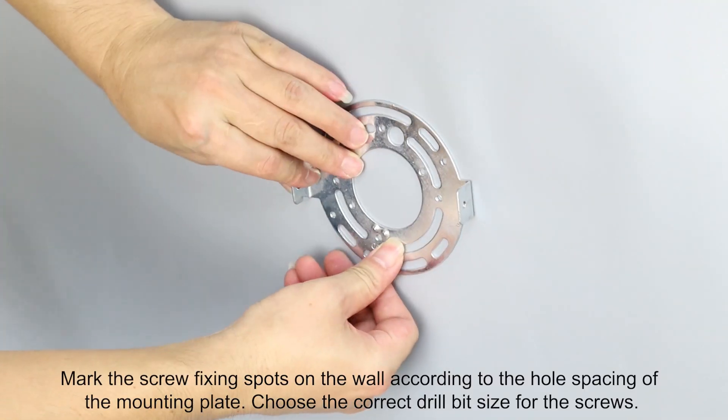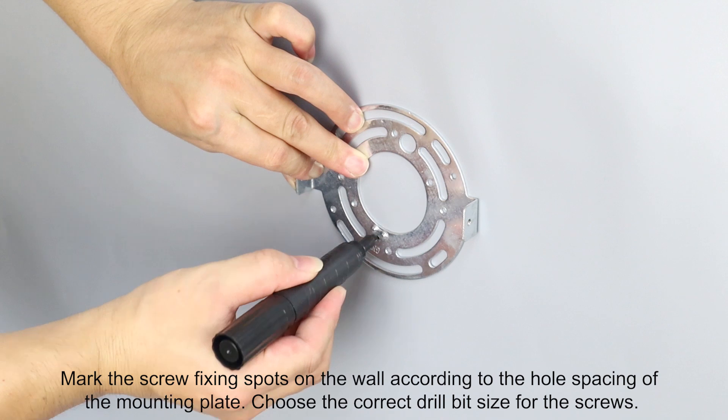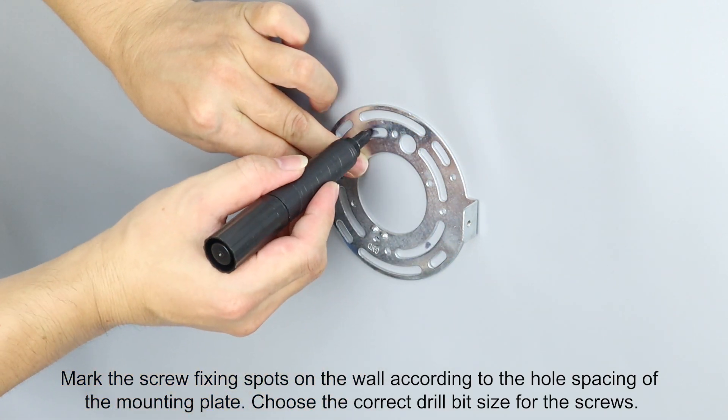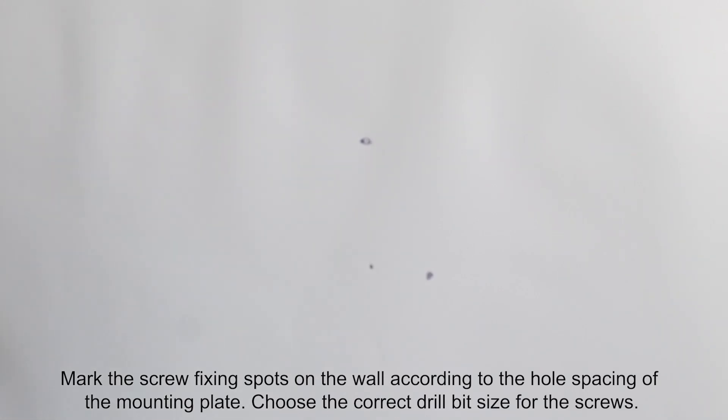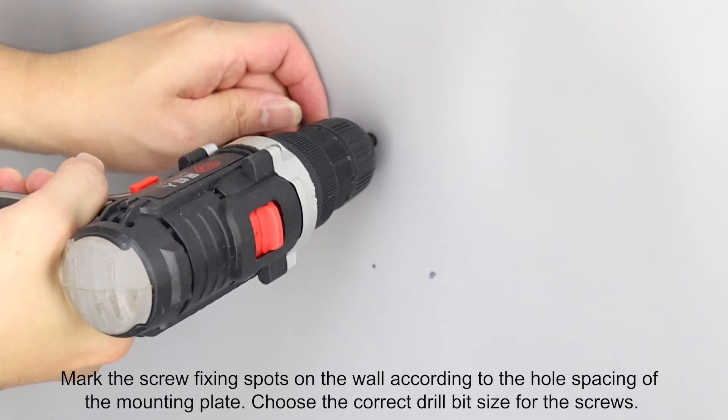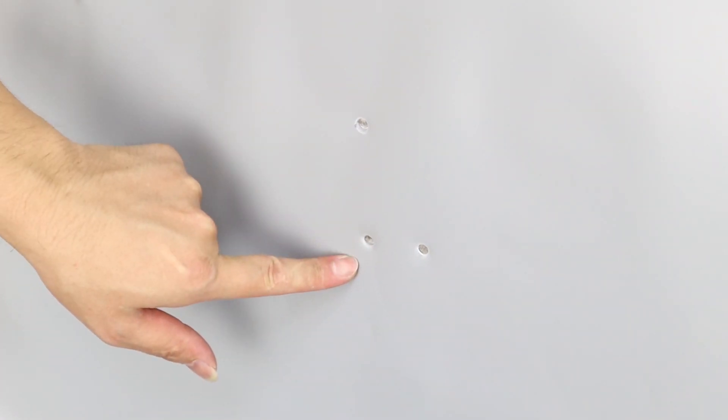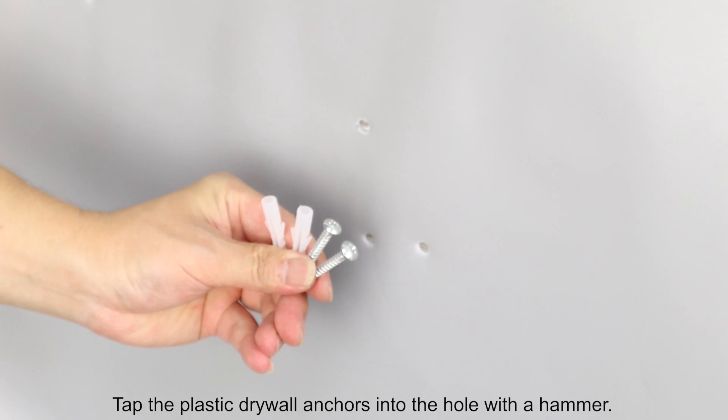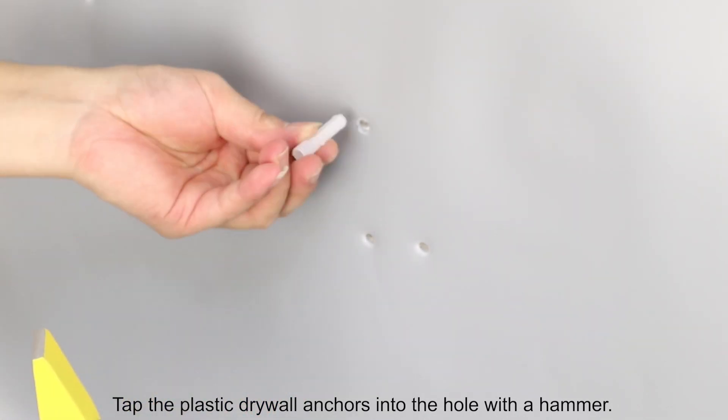Mark the screw fixing spots on the wall according to the hole spacing of the mounting plate. Choose the correct drill bit size for the screws. Tap the plastic drywall anchors into the hole with a hammer.